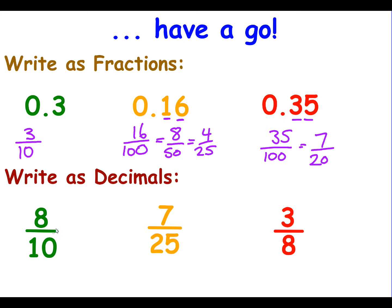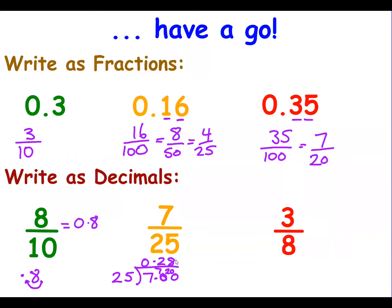Now let's turn these fractions into decimals. 8 divided by 10, using our dividing by ten method, gives 0.8. For 7 over 25: 25 doesn't go into 7, so it becomes 70. It goes in twice — two 25s are 50 — leaving 20. Then 25 goes into 200 eight times. So the fraction 7 over 25 is the same as the decimal 0.28.